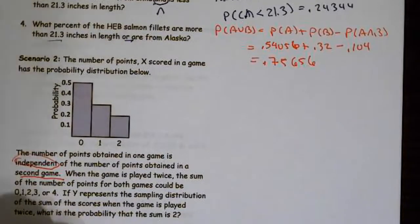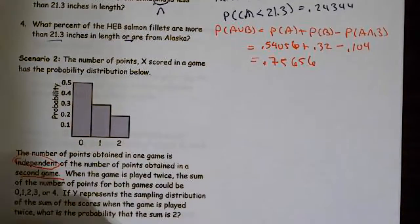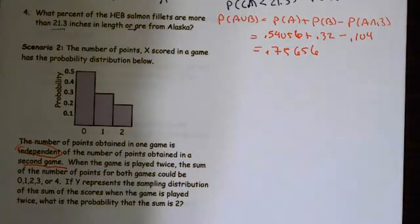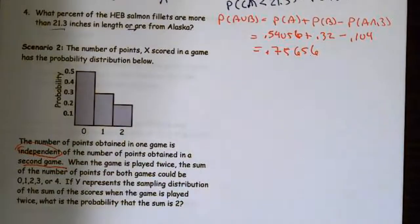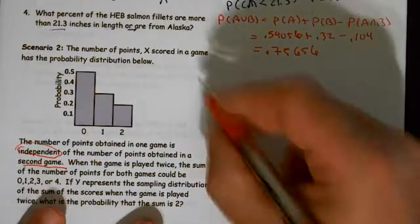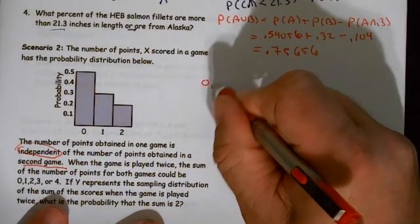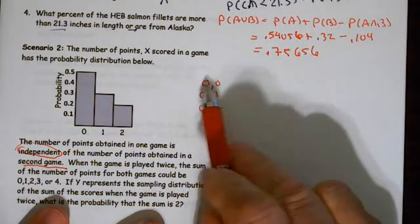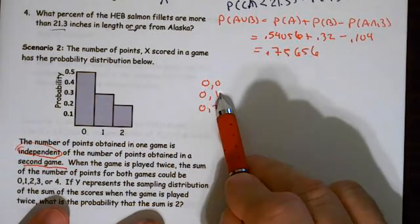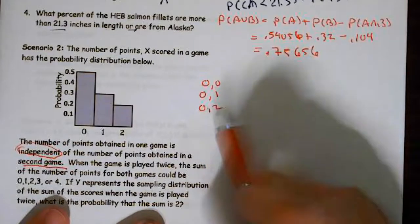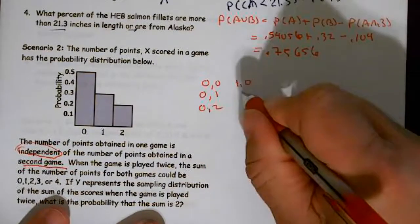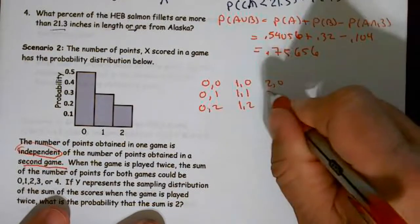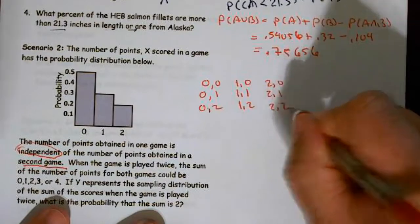That's important because they're telling me they're independent, which means I can multiply. They also told me I'm playing this game twice, which means I'm going to have to set up a two-way table and draw the sample space. My sample space includes: (0,0), (0,1), (0,2), (1,0), (1,1), (1,2), (2,0), (2,1), and (2,2).